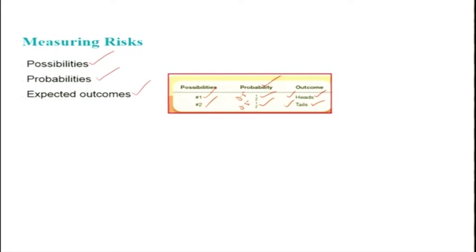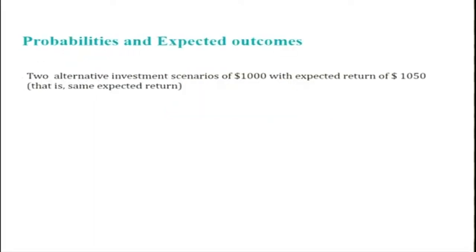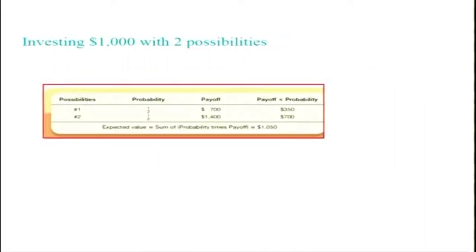Now let us apply this in the context of investment — what are the possibilities, probabilities, and outcomes? We also need to include the expected return when we invest. To discuss this, let us take the case of two alternative investment scenarios of $1,000, with an expected return of $1,050. We will see how we can relate this to possibilities, probability, and outcomes.